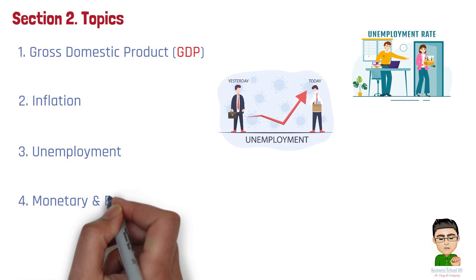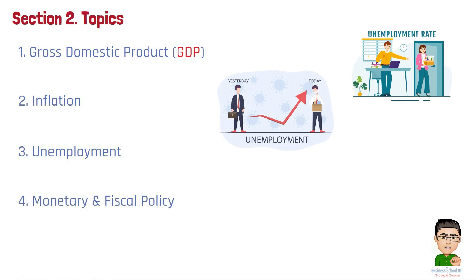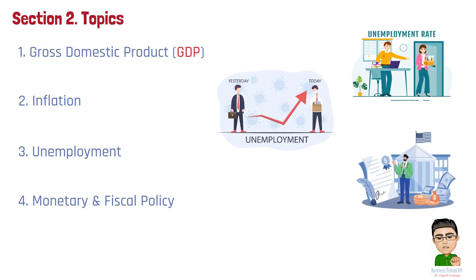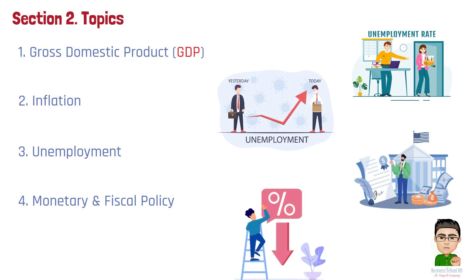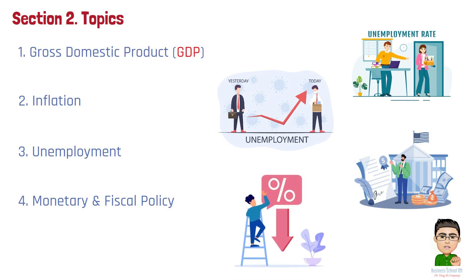Number 4: Monetary and Fiscal Policy. Monetary policy involves managing the money supply and interest rates to influence economic activity, while fiscal policy involves government spending and taxation decisions. Both play crucial roles in stabilizing the economy and promoting growth. For example, in response to the 2008 financial crisis, the Federal Reserve lowered interest rates to stimulate borrowing and spending, while the U.S. government passed stimulus packages to support economic recovery and job creation.